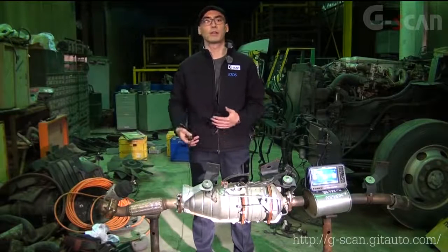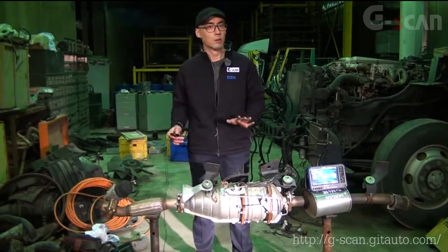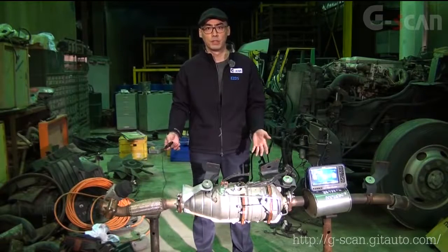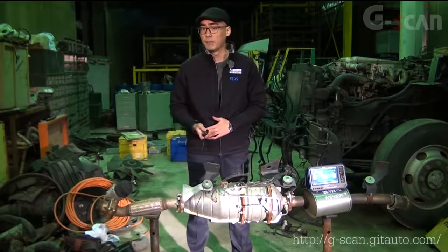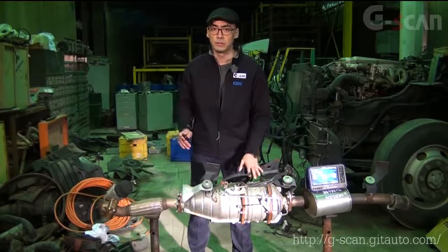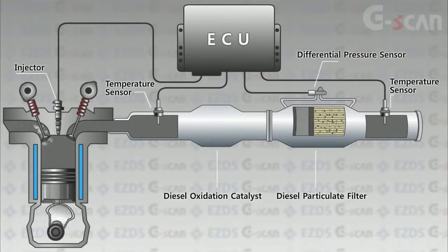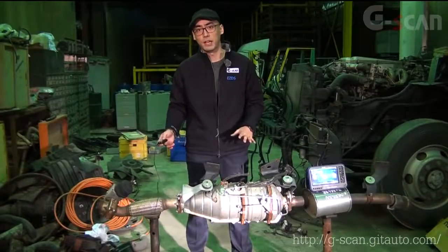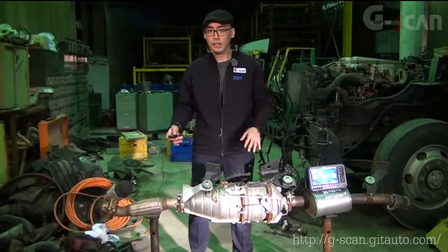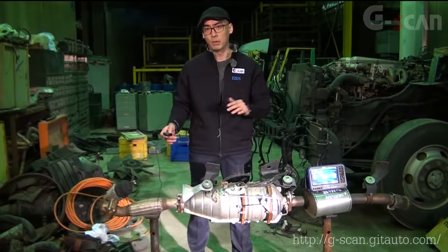This automatic regeneration process happens during operation without the driver knowing about it. However, trucks sometimes run at low speeds where the DPF cannot reach high enough temperatures to burn down captured particulate matter. This is where you have to use a scan tool to manually burn down the PM. You can perform forced DPF regeneration using G-Scan to burn down all the captured particulate matter inside the DPF system. During DPF regeneration, the ECU commands injectors for extra post injection after the main injection to raise the exhaust temperature to at least 500 degrees Celsius. Then the ECU monitors the temperature sensor located before the DPF to check whether the desired temperature is met.